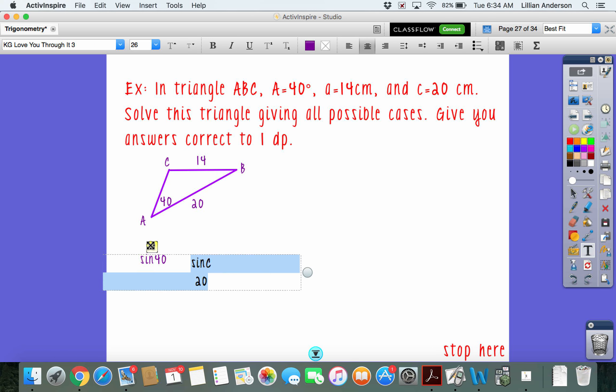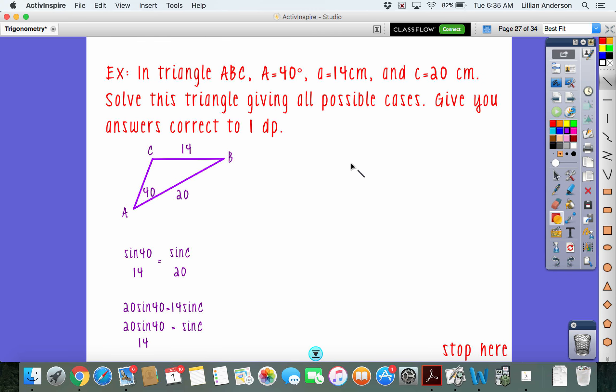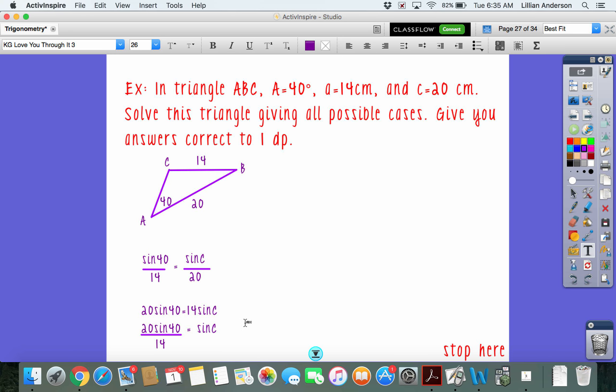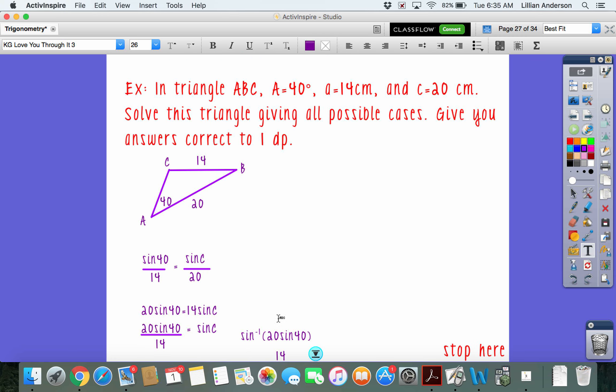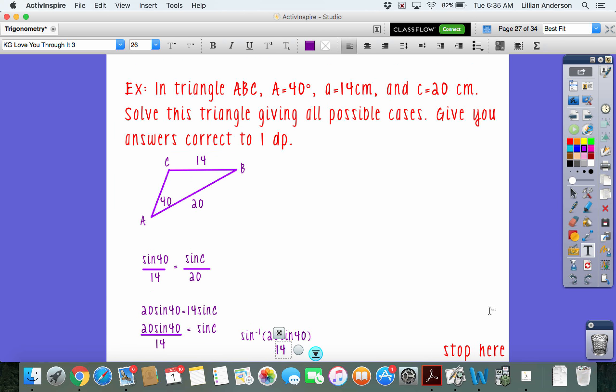Sine of 40 over 14 equals sine of angle C over 20. Now, do remember that when you are looking for an angle, you are going to have to do the inverse. So, to solve this, we're going to cross-multiply. And we're going to have 20 sine of 40 equals 14 sine of angle C. I'm going to divide both sides by 14. And then, lastly, we're going to do sine inverse of that entire thing. So, 20 sine 40 all over 14. And that's going to equal the value of C.